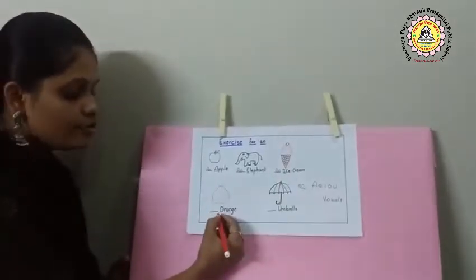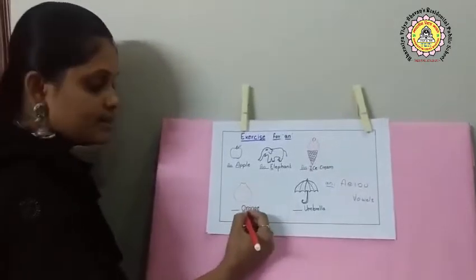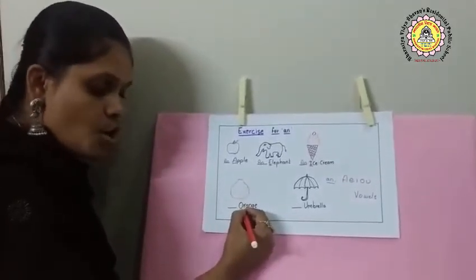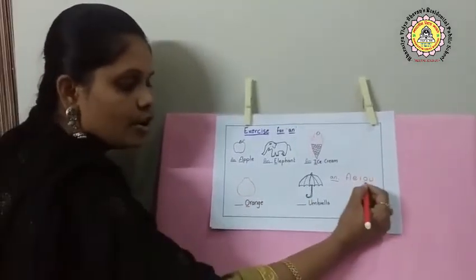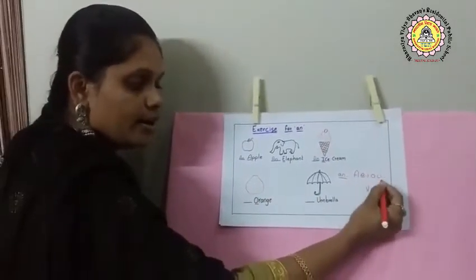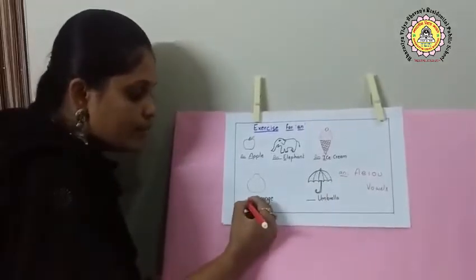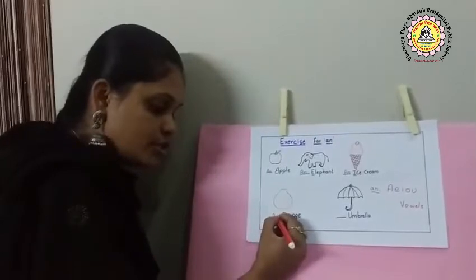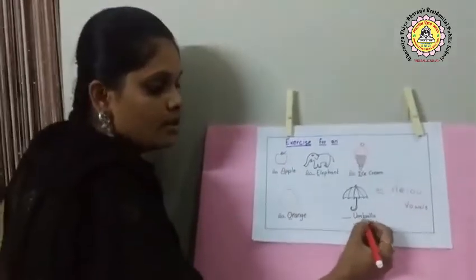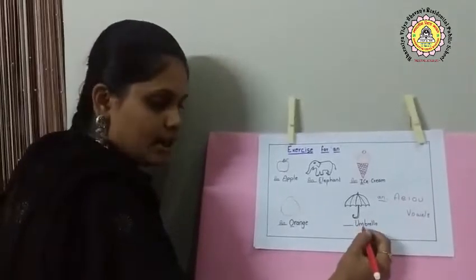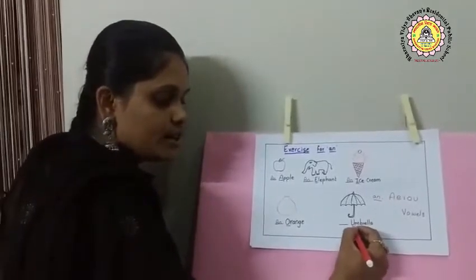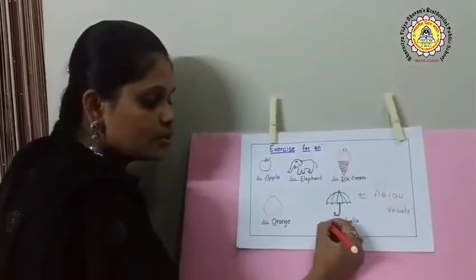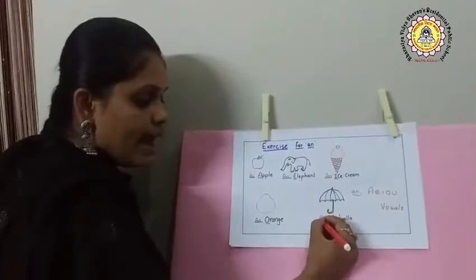Coming to the fourth one — what does the picture look like? It is an orange. What is the first letter? O. O is also one of the vowel letters A, E, I, O, U, so what do we get here — A or AN? AN. An orange. Coming to the last one — what is the picture? Umbrella. U is the letter and it is also one of the five vowel letters, so we get: an umbrella.